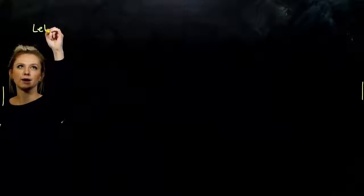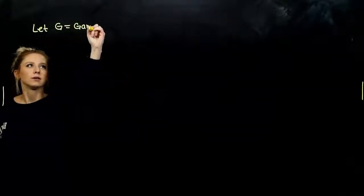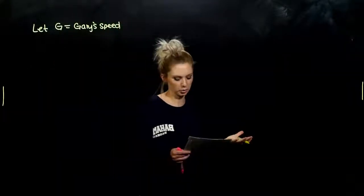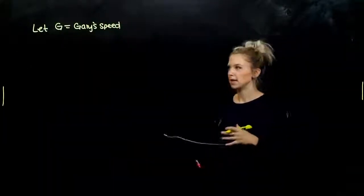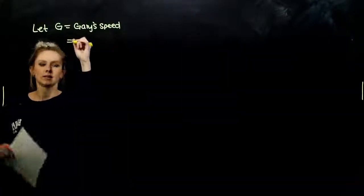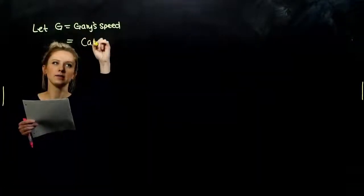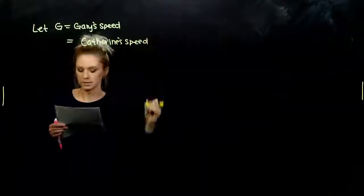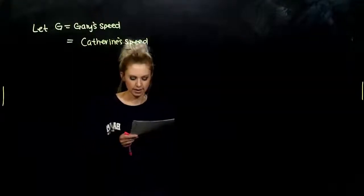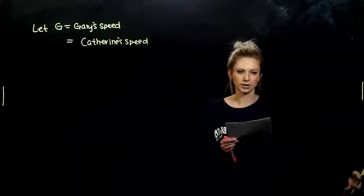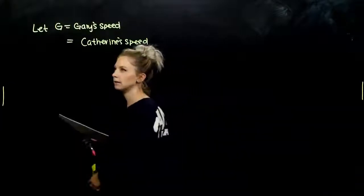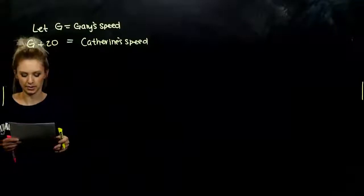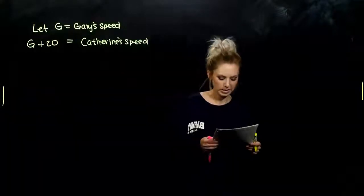So I'm going to let G be Gary's speed, since we're asked to solve for both of their speeds. And if that's true, if I let G be Gary's speed, then how do I represent Catherine's speed? So again, let me read you that first sentence. Catherine drives 20 miles per hour faster than her father Gary. So however fast Gary's going, Catherine's going 20 miles an hour faster than that.